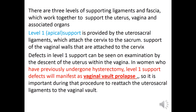There are three levels of supporting ligaments and fascia which work together to support the uterus, vagina, and associated organs. Level 1 — apical support — is provided by the uterosacral ligaments, which attach the cervix to the sacrum, supporting the vaginal wall. Defects in level 1 support can be seen on examination by the descent of the uterus within the vagina.